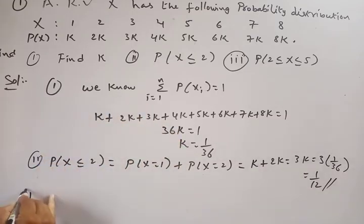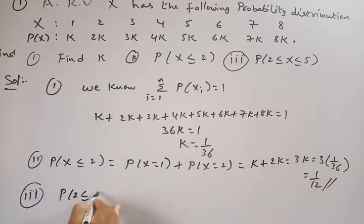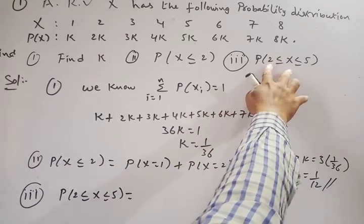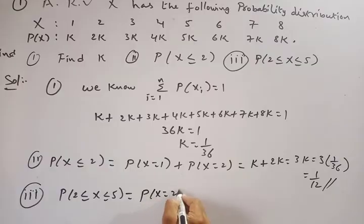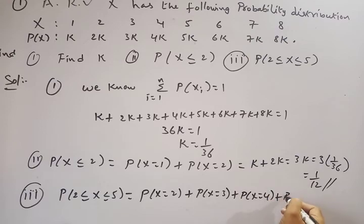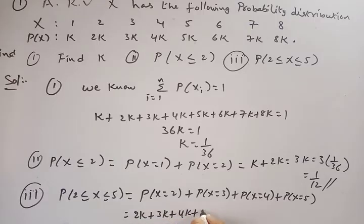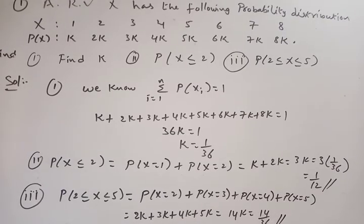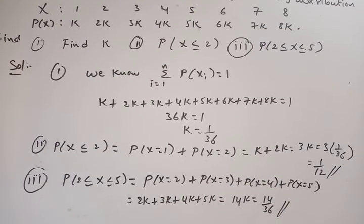Third part: P(2 ≤ X ≤ 5). This means X takes values 2, 3, 4, and 5. P(X=2) = 2k, P(X=3) = 3k, P(X=4) = 4k, P(X=5) = 5k. Adding them: 2k + 3k + 4k + 5k = 14k = 14 × (1/36) = 14/36 = 7/18.